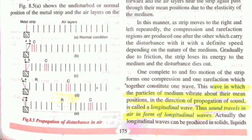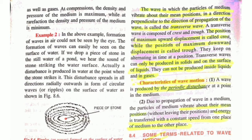Transverse waves travel perpendicular to the direction of propagation of the wave. Always remember that transverse waves are composed of crests and troughs. Transverse waves can be produced in solids and on the surface of liquids — not inside the liquid, and not in gases. A characteristic of wave motion is that it is produced by periodic disturbances, vibrates about its mean position, and energy is transferred from one place of a medium to another.